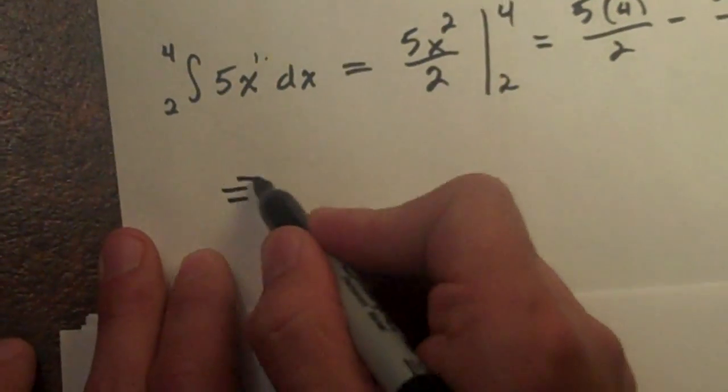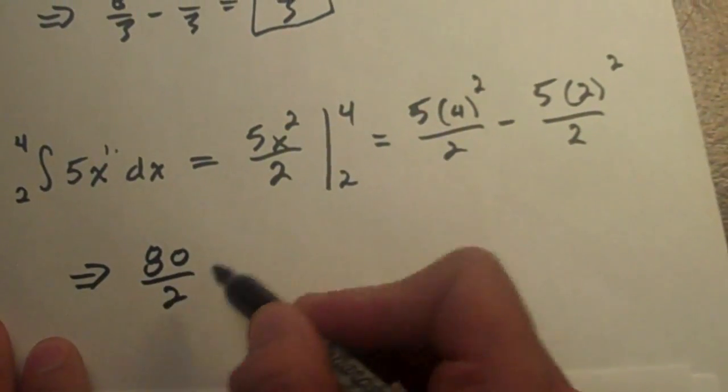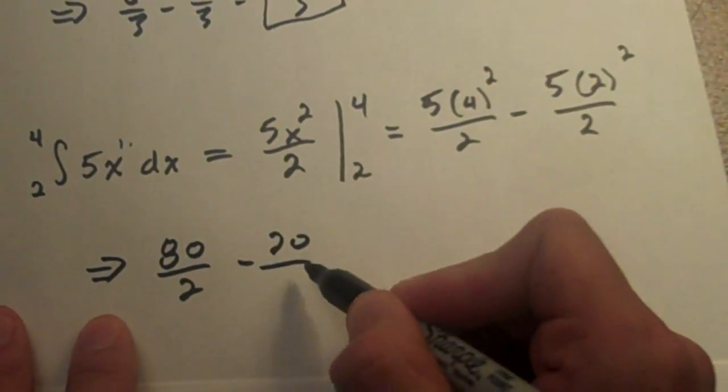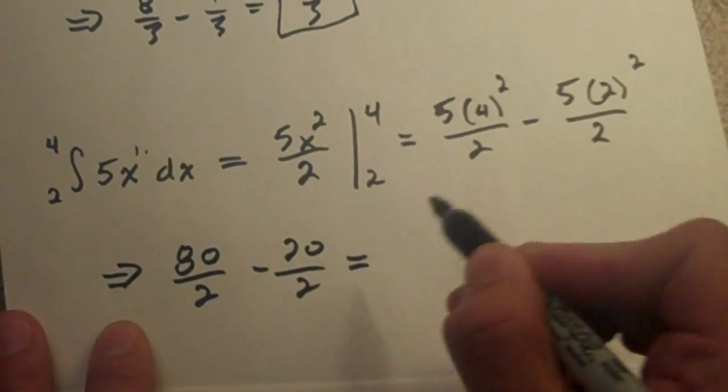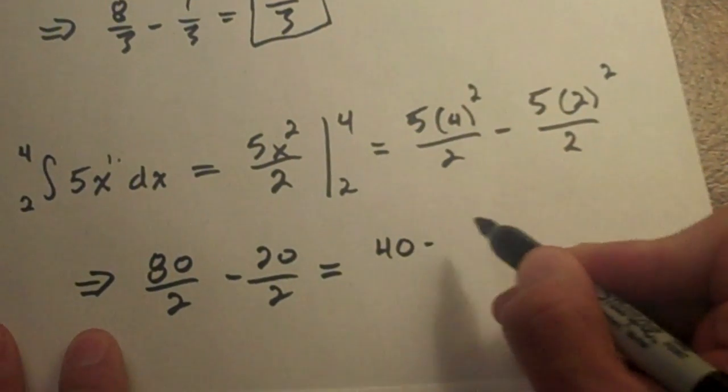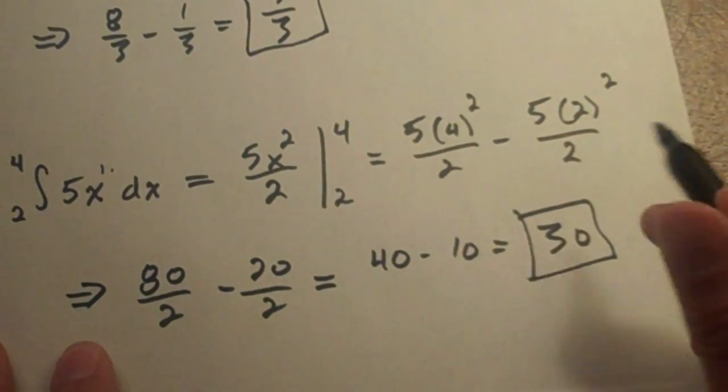And go ahead and work it out. When you work that out it's going to be 80 over 2. And this one's going to be I think 20 over 2, which equals we can simplify that to 40 minus 10 equals 30. That's your final answer.